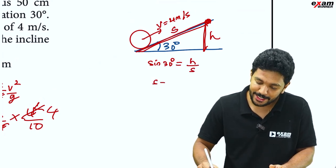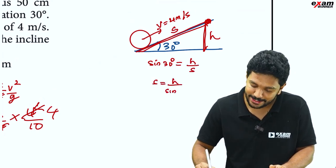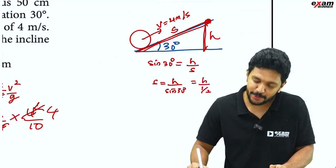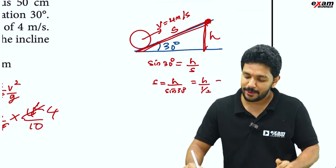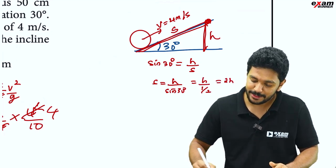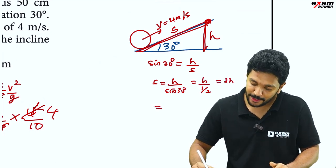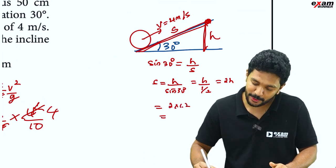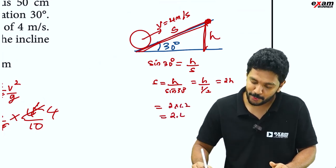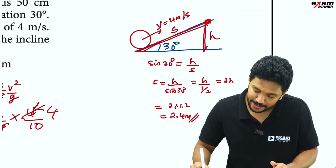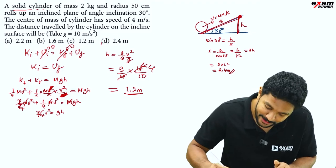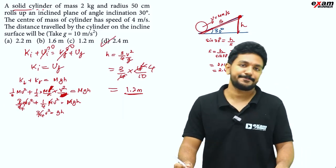We get s equals h divided by sin 30 degrees. Since sin 30 is 1/2, s equals 2h. So s equals 2 times 1.2 meters, which equals 2.4 meters. The distance travelled by the cylinder on the inclined surface is 2.4 meters.